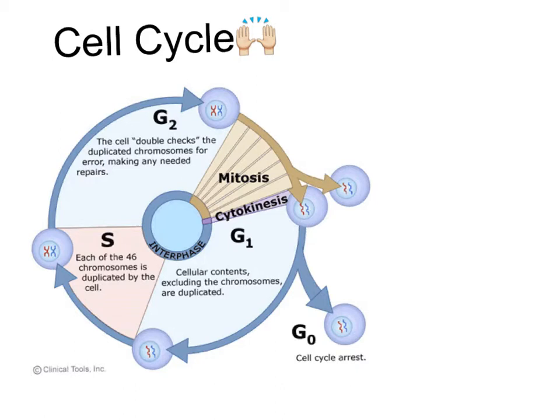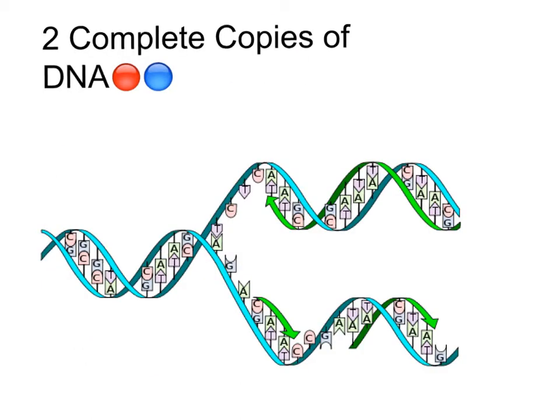During the process of S phase, each of the 46 chromosomes is duplicated by the cell. During the process of replication, new bonds are forming with new bases.